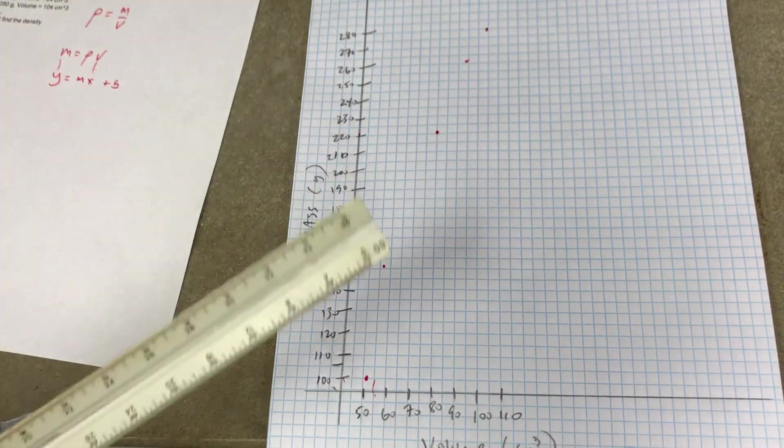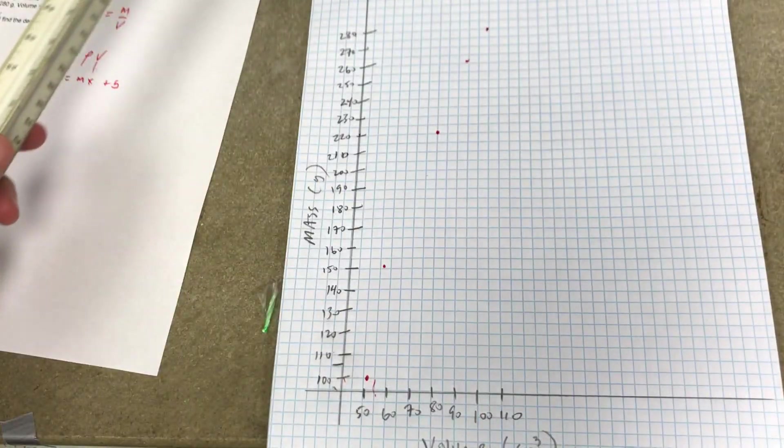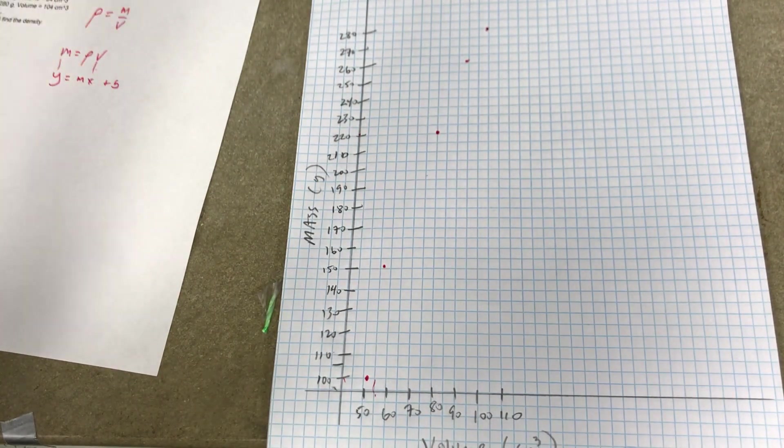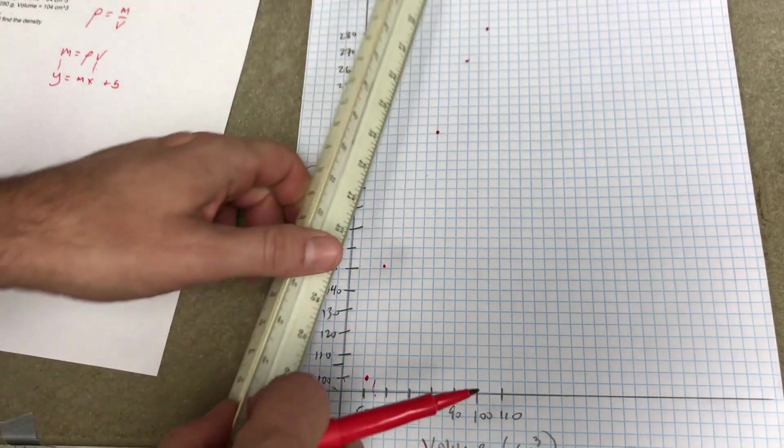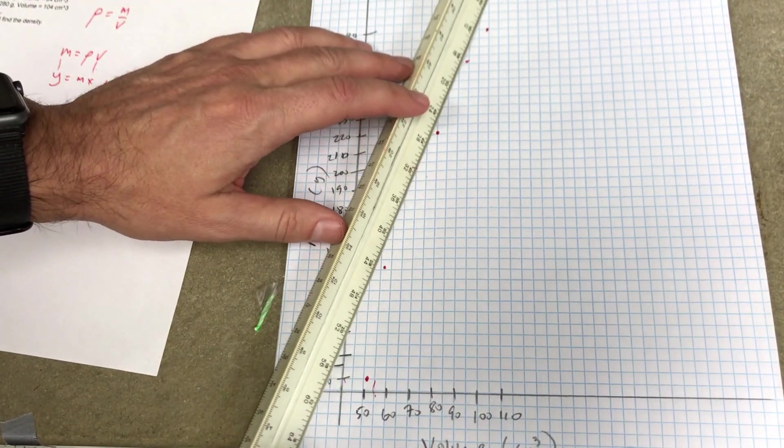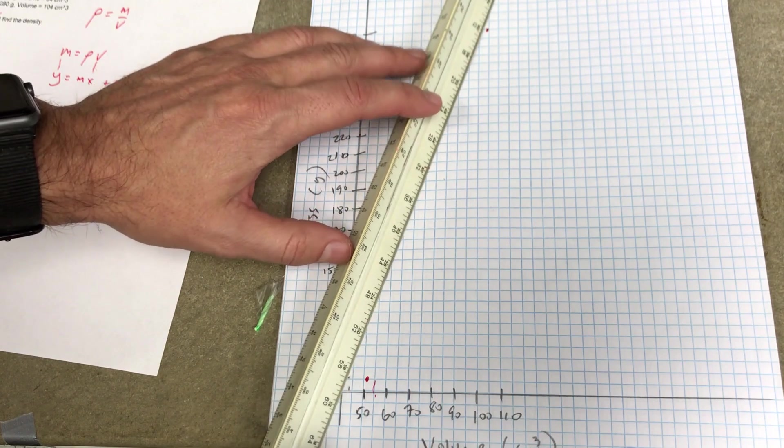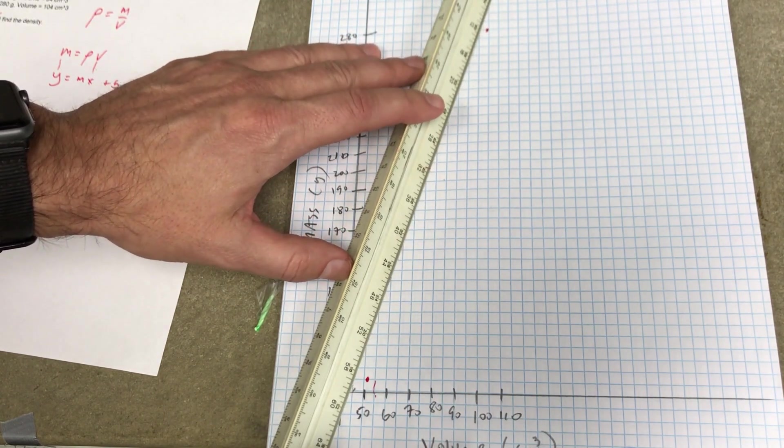There, now I have one, two, three, four, five data points. They're not in a perfect line, so I don't want to connect a line. I want to do a best fit line. So I'm going to kind of take my straight edge and approximate something that's close to all the data points. It doesn't have to touch any of them.